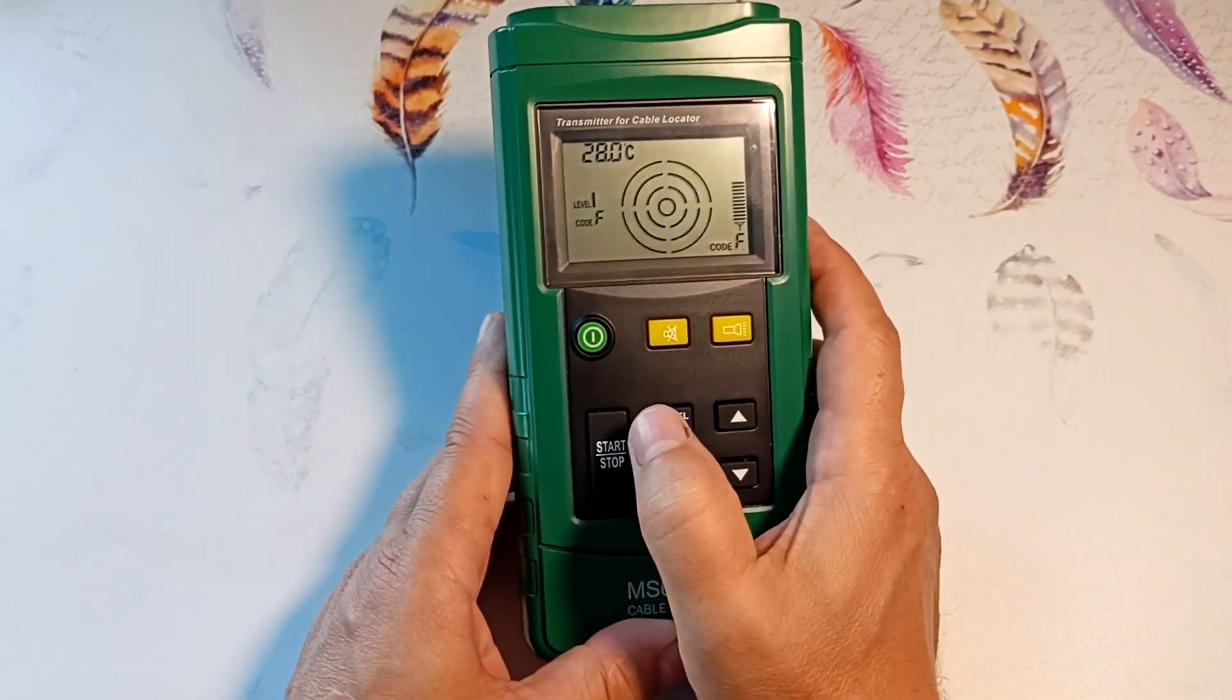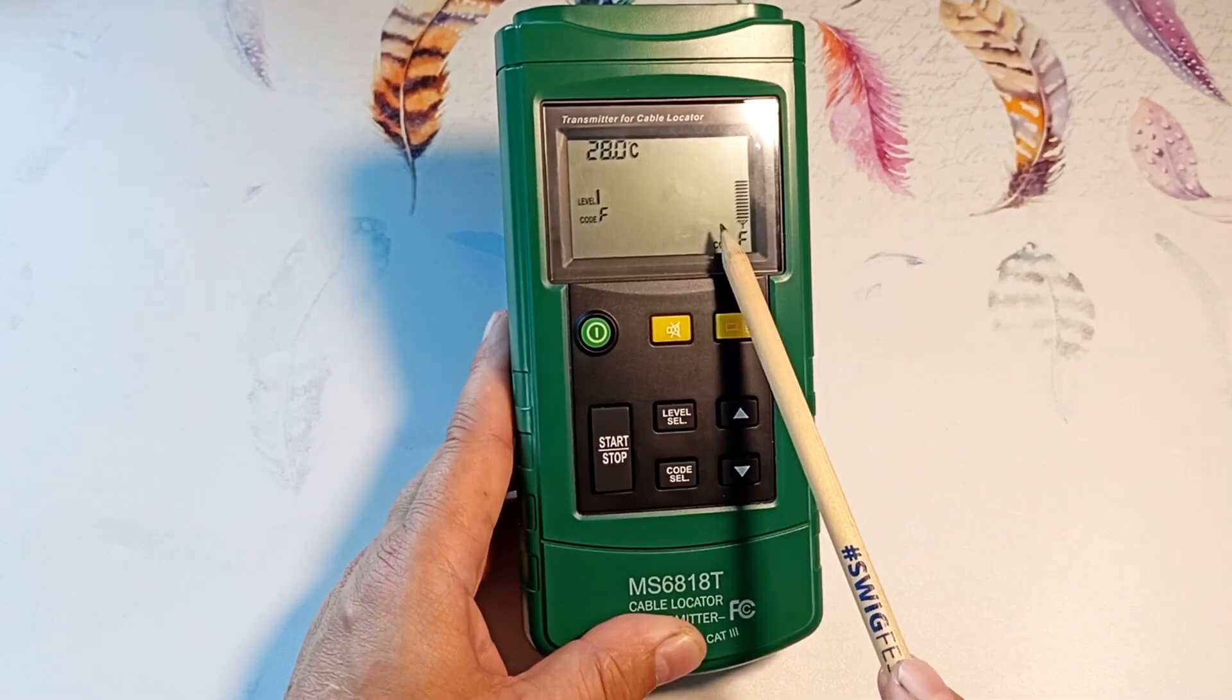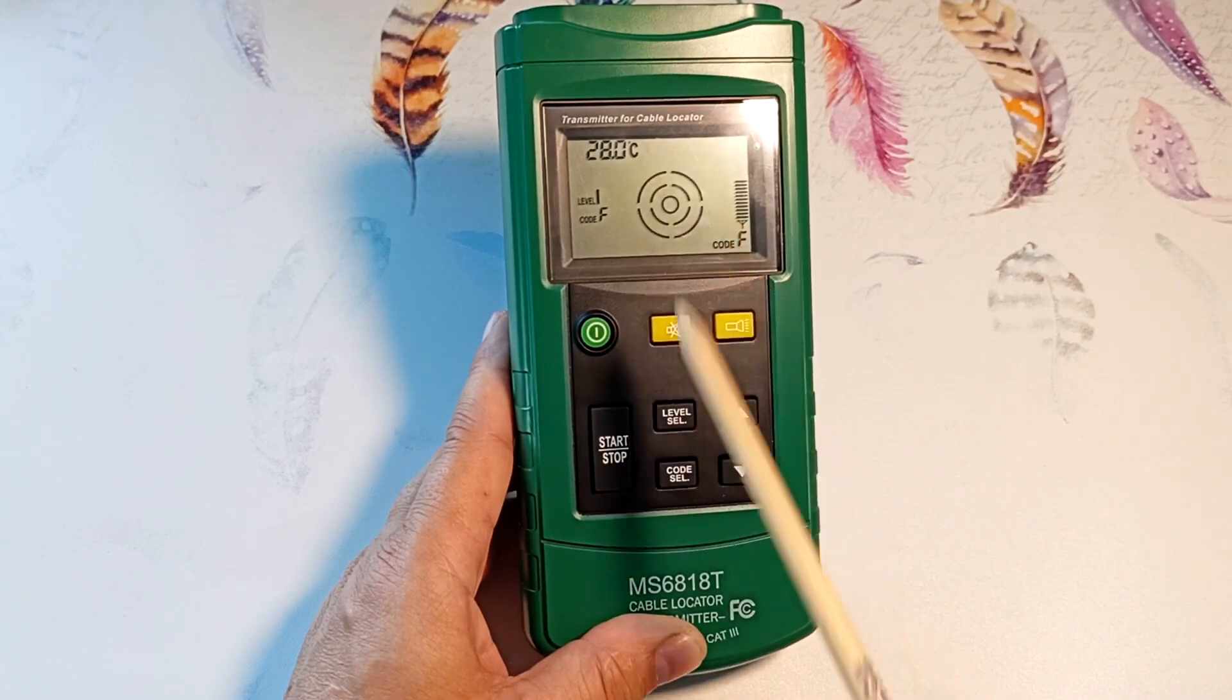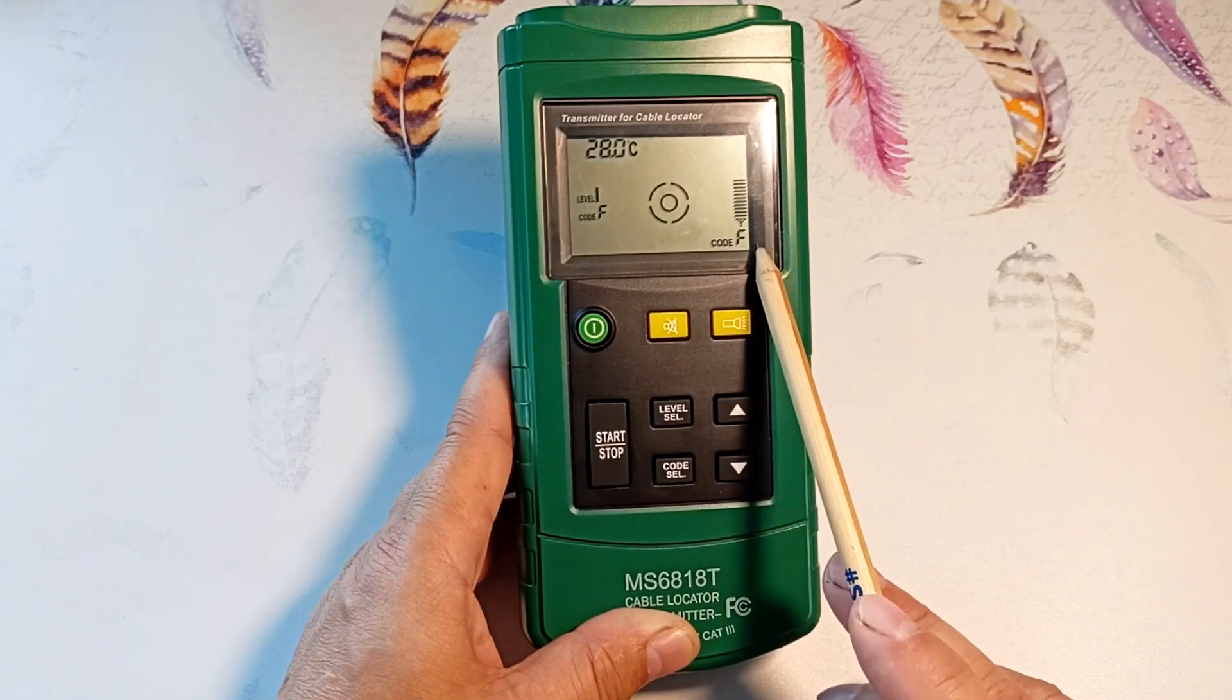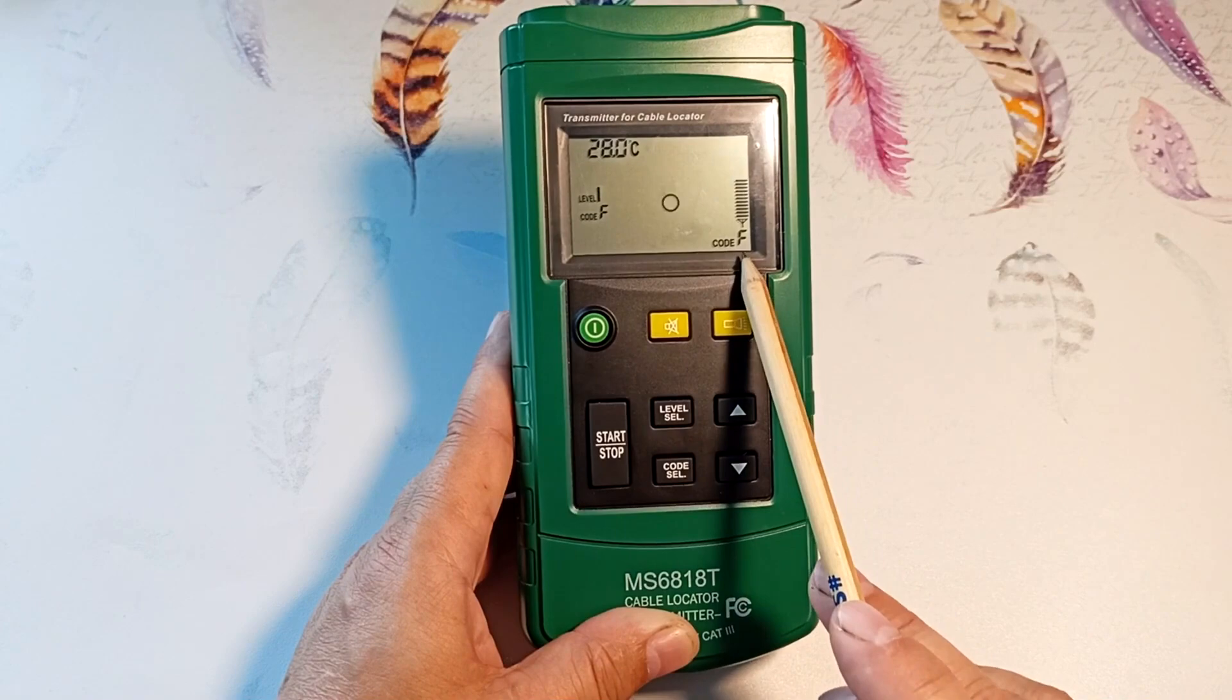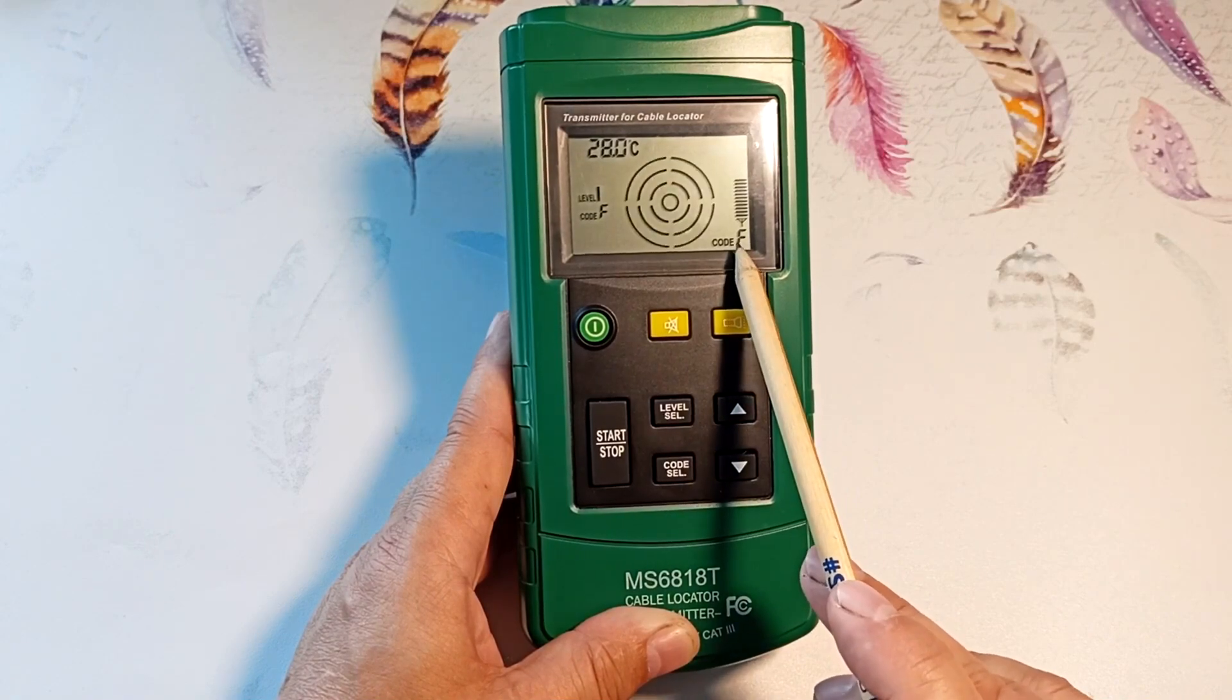Use the start button to start generation. Diverging circles indicate that the generator is working. The generator has a self-monitoring function. This scale shows the signal level that actually enters the line. The encoding being sent is immediately displayed.